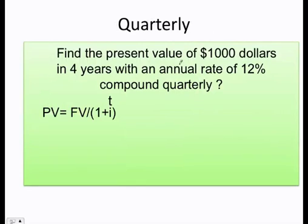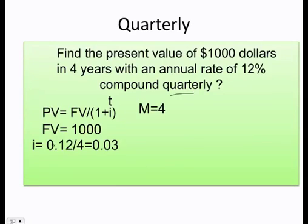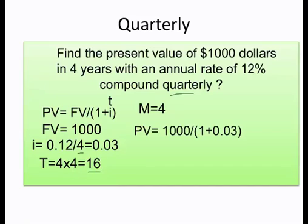Let's do another problem. The same problem, but now it's compound quarterly. How do I do it? Remember, now M is equal to 4. The interest must be divided by 4. At the same time, the time needs to be multiplied by 4. Now I have 16 periods. Finally, I just apply my formula, and I get PV 623.17.